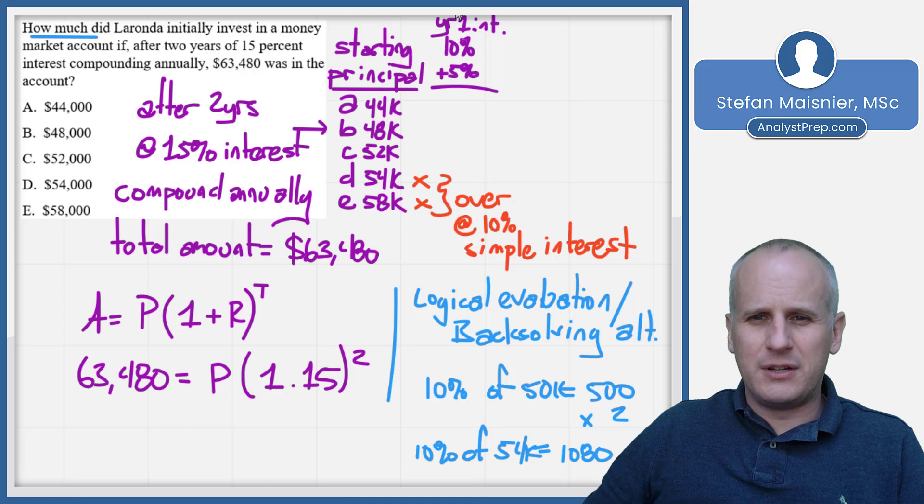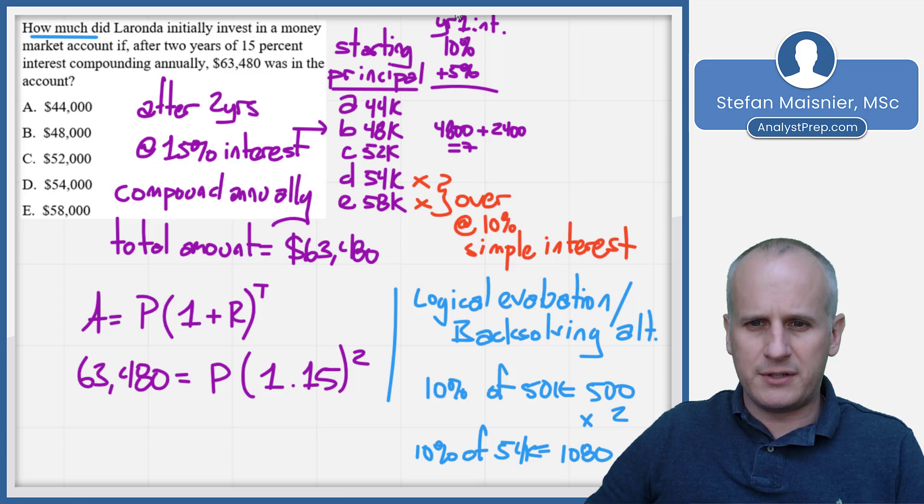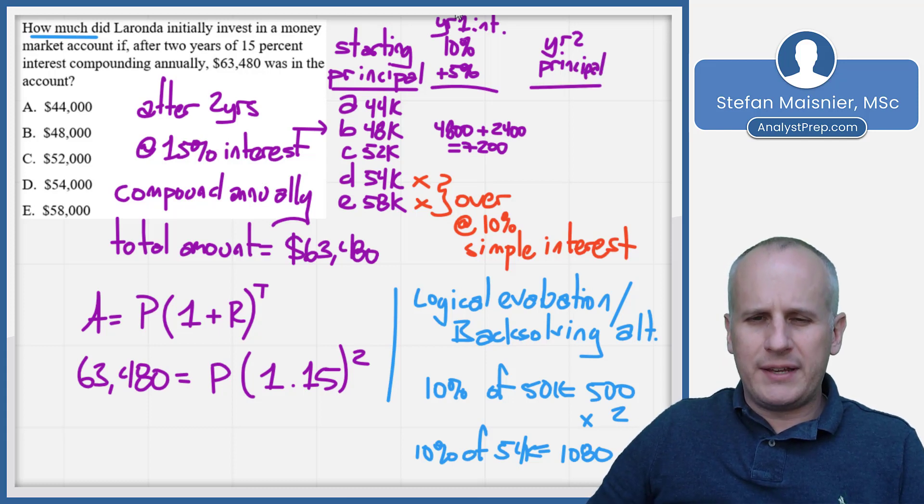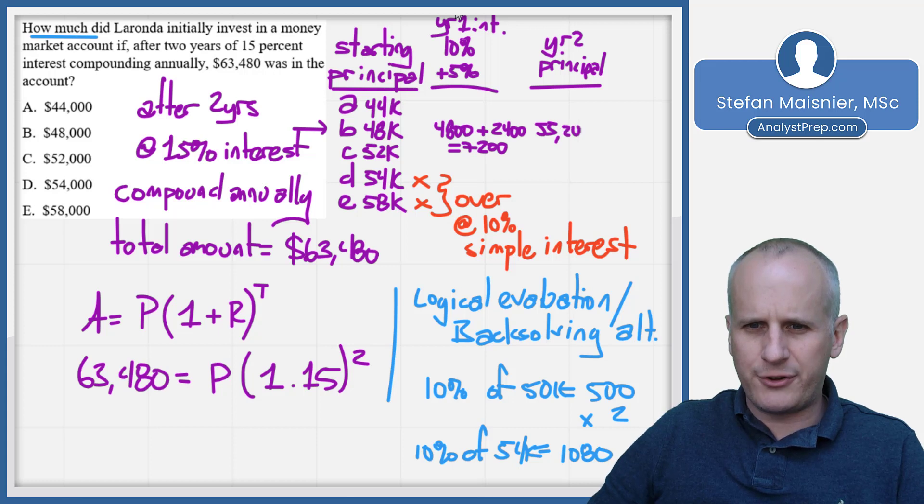And so once we find that estimation, we can just manually calculate our interest from year to year, knowing that it's not that hard to solve for 15%. So we're going to have 10% plus 5%. And that's going to be the year one interest. So we start with 48,000 knowing that 54 and 58 for the reason that we just articulated is going to be too high. So 48,000, we know that 10% is 4,800 plus the half of that, which is 2,400. And so that's a total of 7,200 on top of the 48,000. So that means that my new year two principal is going to be 48,000 plus 7,200, which is 55,200.